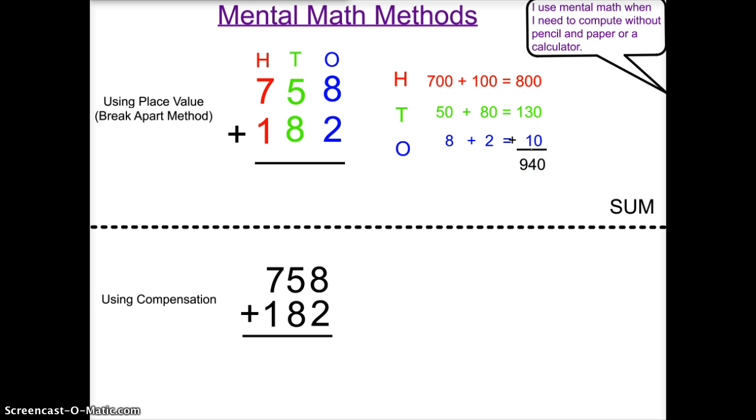If I were to regroup, I could check my work and show you that I'm correct. 8 plus 2 is 10. Put down the 0, regroup the 1. 5 tens plus 1 ten is 6 tens, plus 8 is 14 tens. Put down my 4, regroup my 1. 1 hundred plus 7 hundred plus 1 hundred is 940. As you can see, I've gotten the sum in both ways.